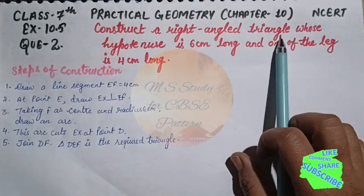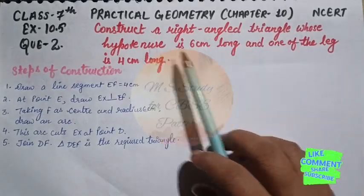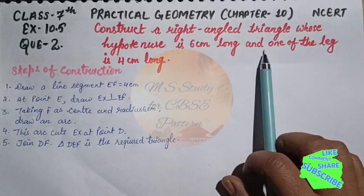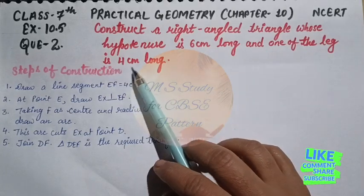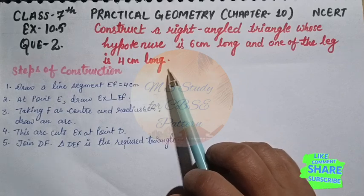The question is: construct a right-angled triangle whose hypotenuse is 6 centimeters long and one of the legs is 4 centimeters long.